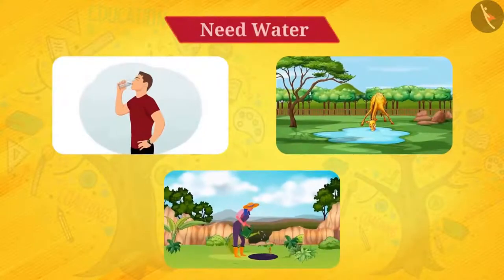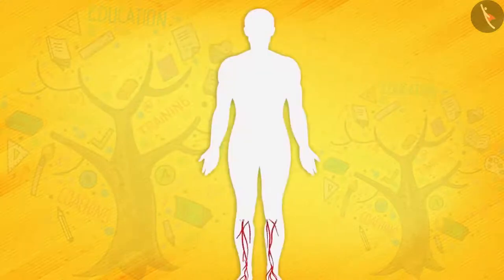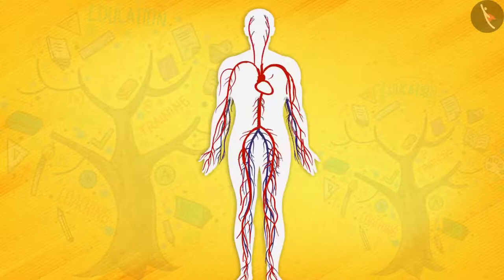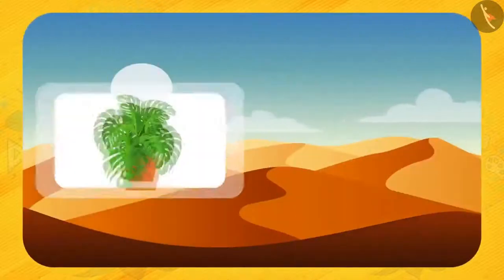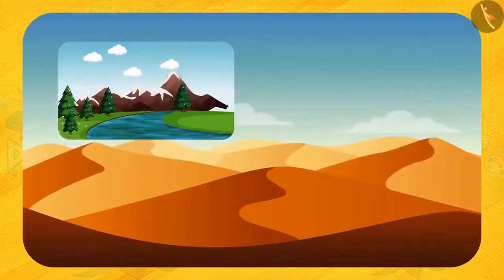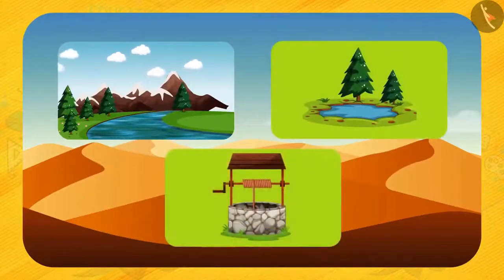Friends, it is well known that humans, animals, and plants all need water. Water is essential for all living organisms as it is required for all cellular reactions occurring inside the body. We see very few plants and animals in the desert. Have you ever thought why? Because sources of water like lakes and rivers are not found in the desert.